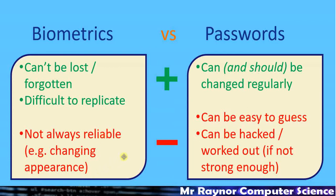The downsides of biometrics: they're not always reliable. People's appearance does change over time — you might do your hair differently, grow a beard, or wear glasses on certain days — so computer systems need to be flexible to cope with changing appearance. Moving on to passwords: the benefit is that you can change them. If someone manages to get a copy of your fingerprint you can't change it, but with a password you can simply update it to restrict access. The downside is that passwords can be easy to guess or cracked via brute force, so a combination of both methods is often more secure.